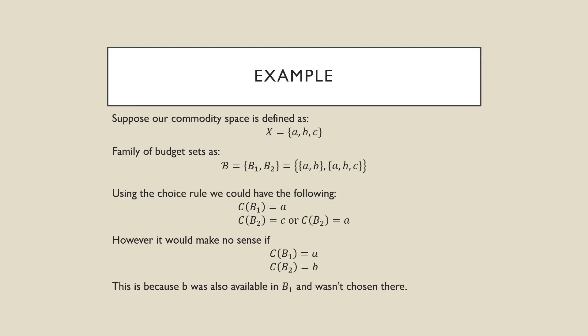Using the choice rule we have the following. If we evaluate C at B1, we can choose A, or we can have C(B2) equal to C, or C(B2) equal to A — either one of these alternatives makes sense. However, it doesn't make any sense if we have our choice in B1 being A and our choice in B2 being B. This is because B was also available in B1 and wasn't chosen there, so why did the order switch? This brings us to a key economic principle.